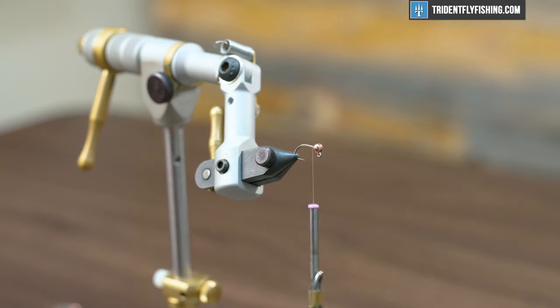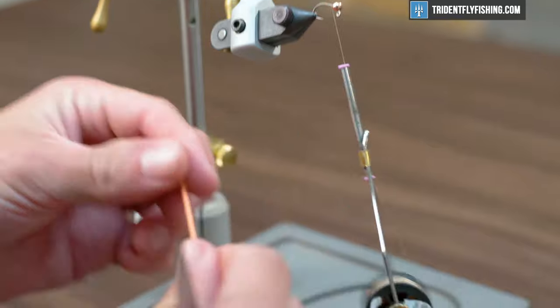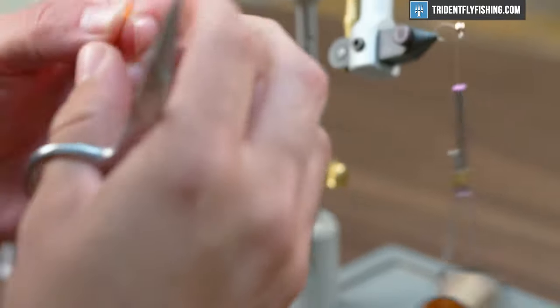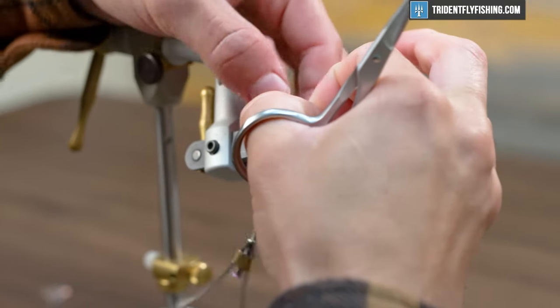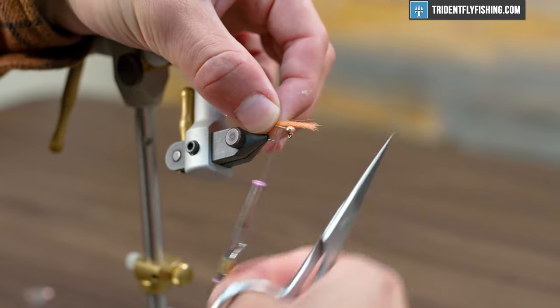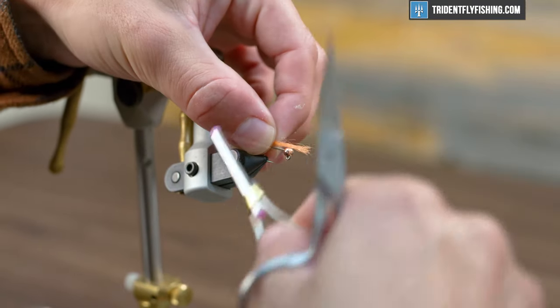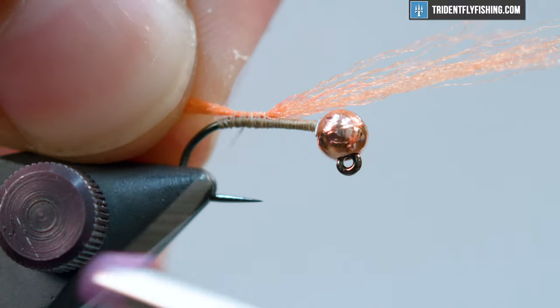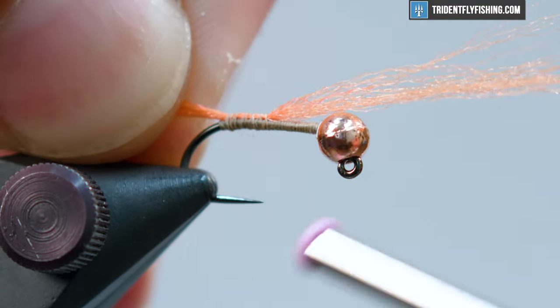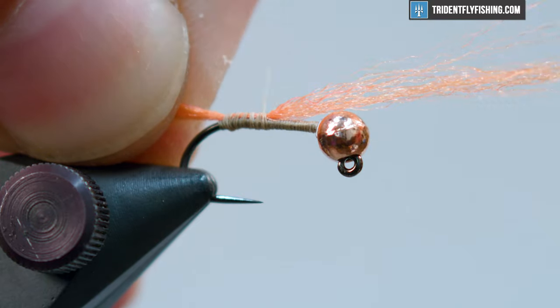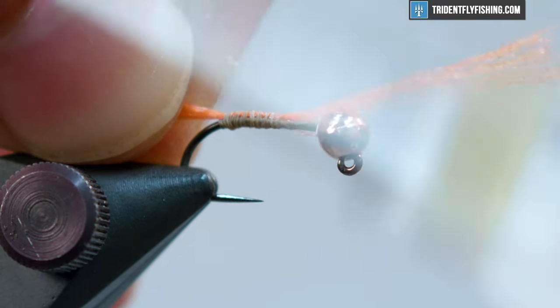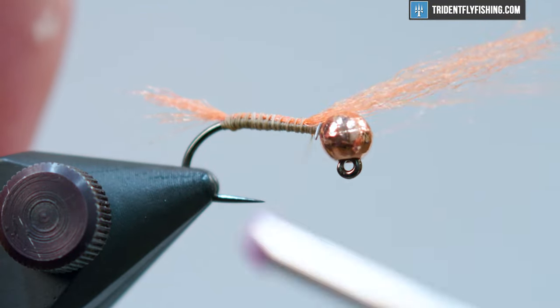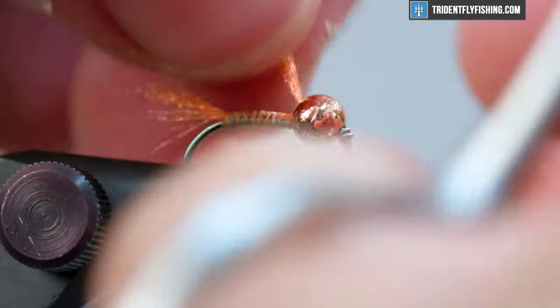We're going to move into some orange antron yarn here for the tail. We don't need a lot so cut yourself off a half inch and we'll tie that right down into the abdomen right where the bend starts. You can wrap that back a little bit and then run that excess up the abdomen and into the thorax right to the lead and then snip the excess.